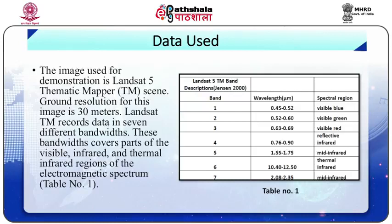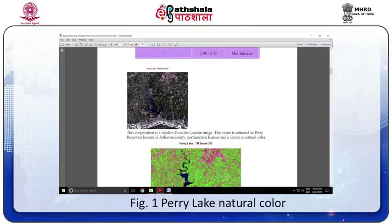The image used in this demonstration is a Landsat 5 Thematic Mapper scene. Ground resolution for this image is 30 meters. Landsat TM records data in seven different bandwidths. These bandwidths cover part of the visible, infrared, and thermal infrared region of the electromagnetic spectrum, as shown in table number one. This composition window is a window from the Landsat image. This scene is centered on Perry Reservoir located in Jefferson County, Northeast Kansas, and is shown in natural color in figure number one.